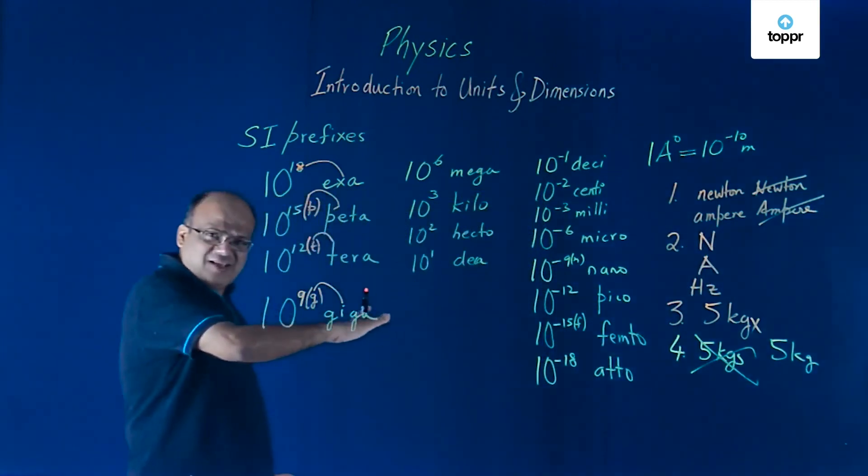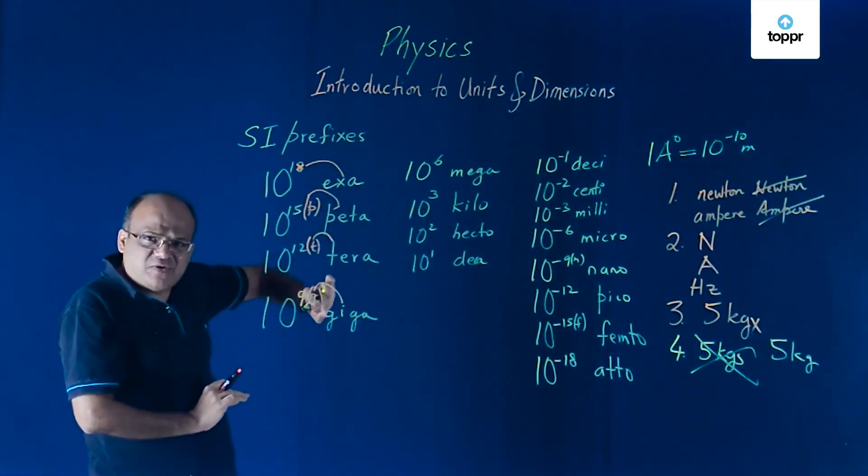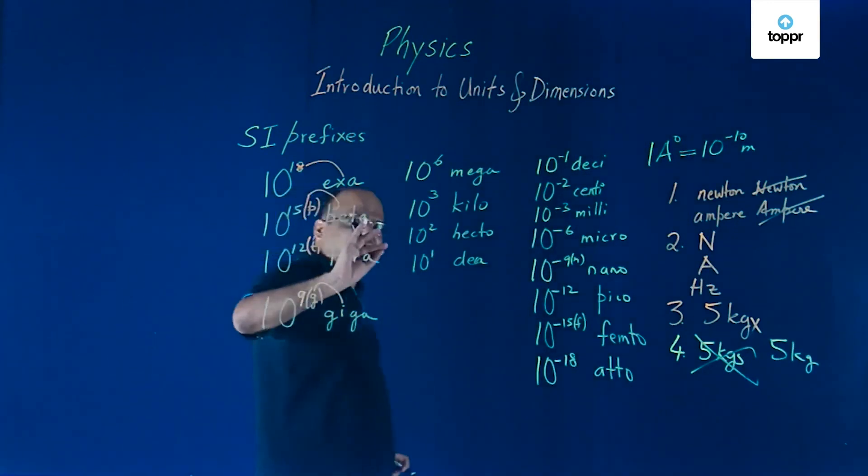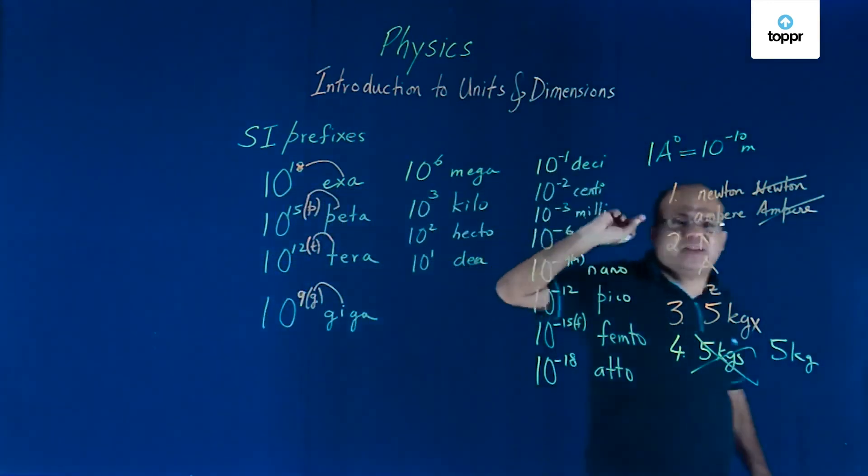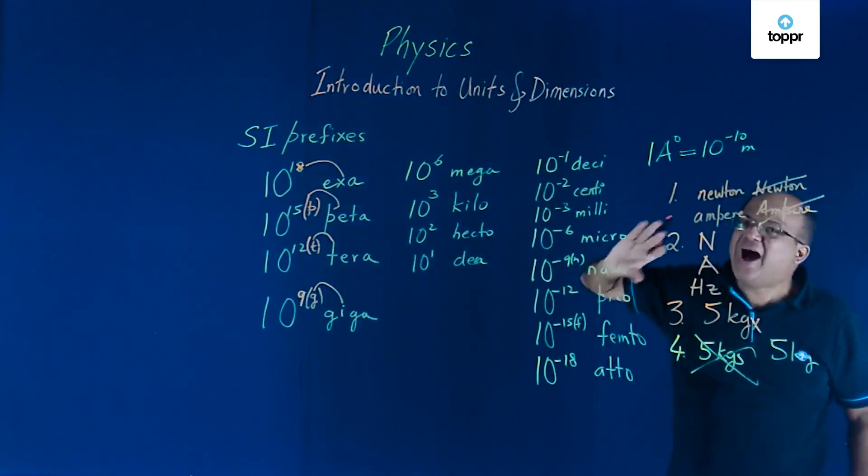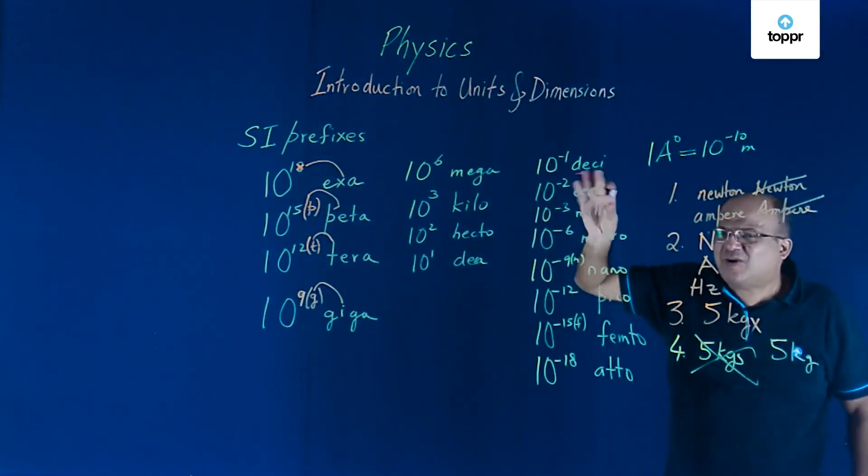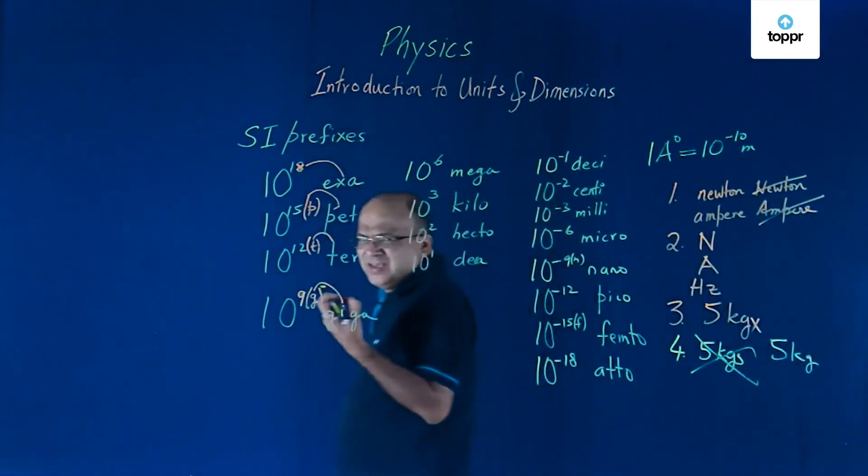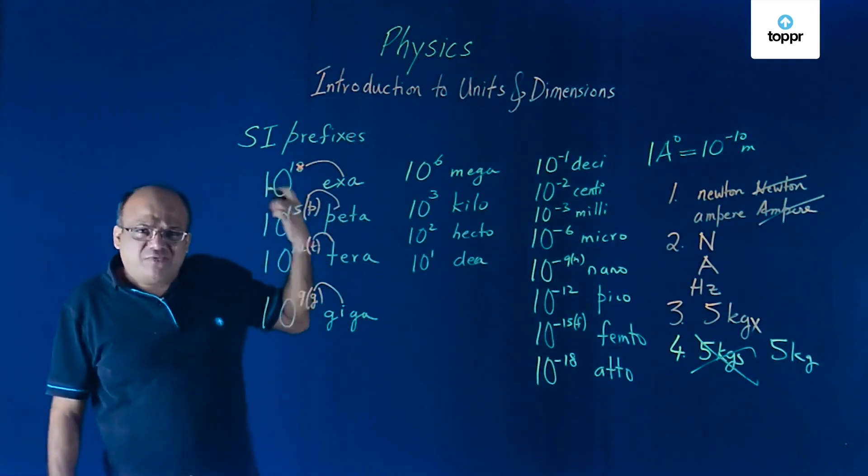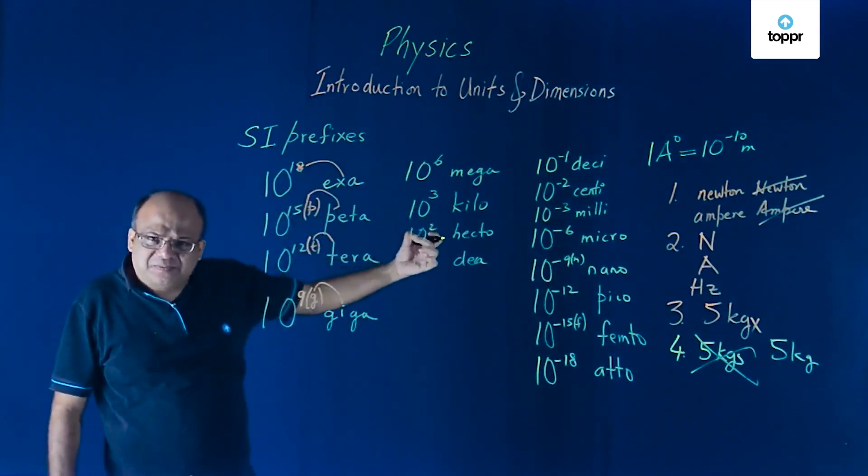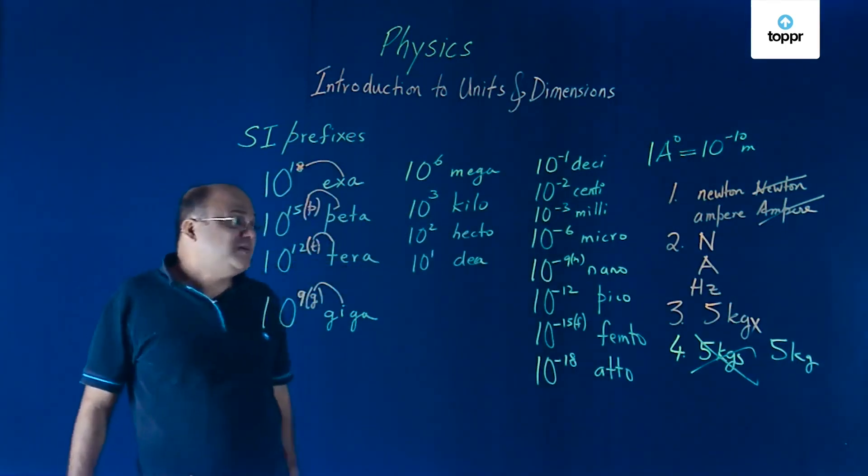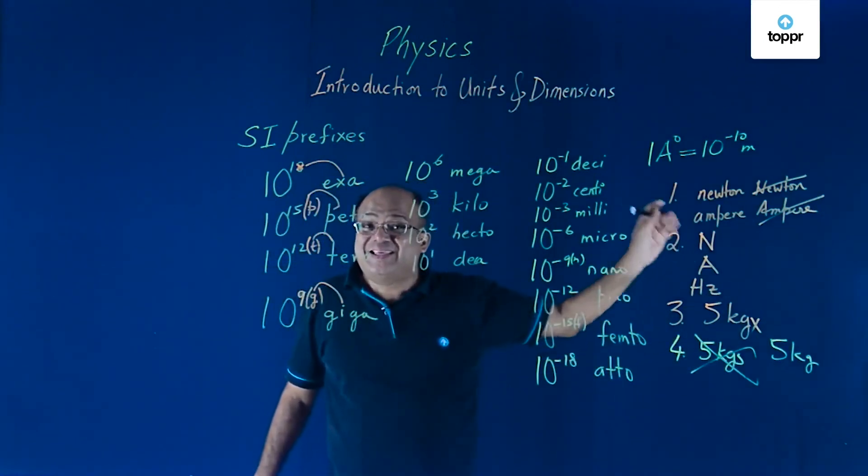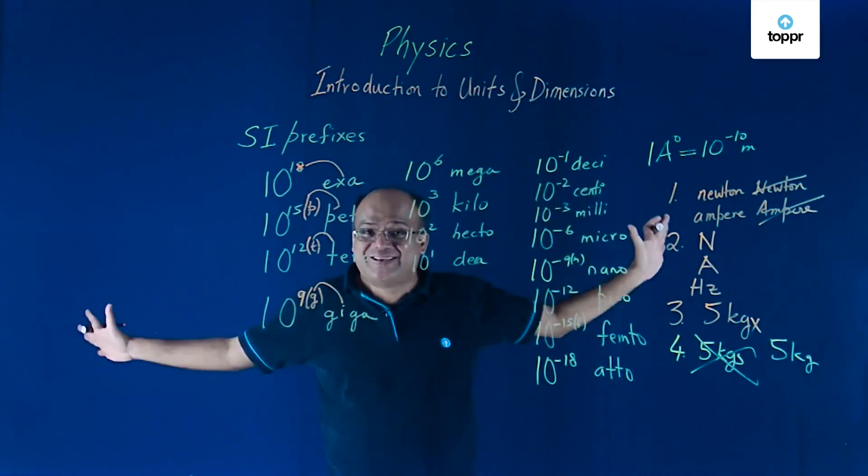So there are 4 rules in SI. Full name of units named after the person do not start with a capital letter. Symbols are in capitals. If they have got 2 alphabets, then the first alphabet is capital. Symbols are not followed by full stop. And the last rule, symbols are not written in plural form. These are the rules of SI.